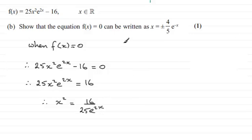Now, looking at the answer we need to get, I can see that if we square root both sides, x is going to be the square root of 16/25, but I'll bring the exponential function e^(2x) up to the top so that becomes e^(-2x).